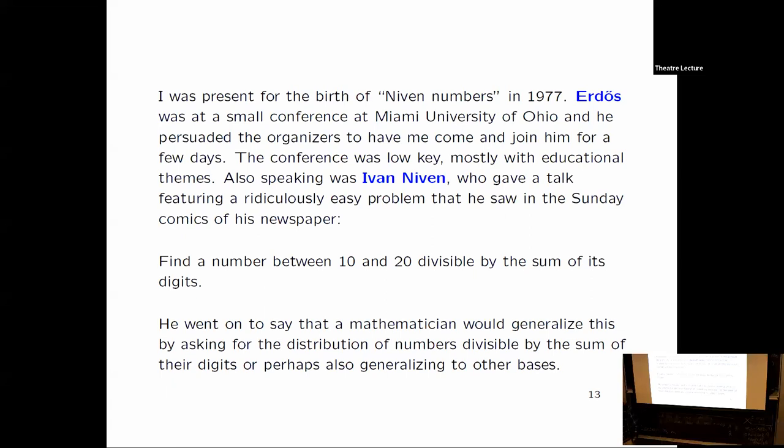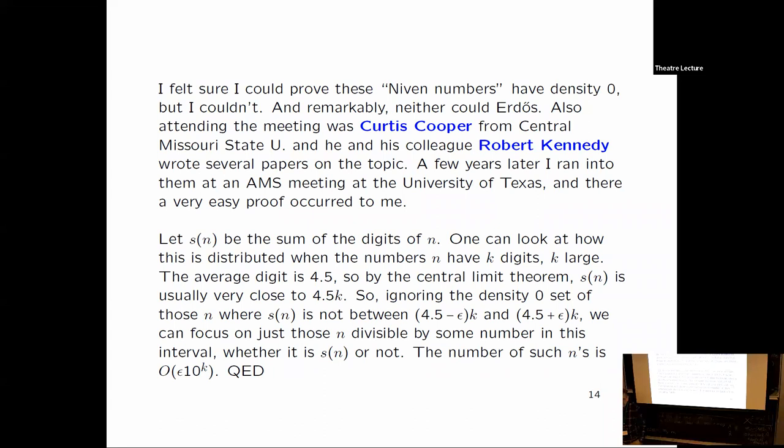Now when a mathematician wouldn't stop by saying it's absolutely trivial, they generalize to other bases for example for the distribution of such numbers and not restricting to the interval 10 to 20. So I thought that we should be able to prove that these Niven numbers, numbers divisible by the sum of their digits in base 10, that those numbers, that's a rare occurrence. These numbers should have asymptotic density zero. But I didn't really know how to prove it. And Erdős, I mentioned it to him, he didn't know how to prove it either. I guess he didn't think very hard because it turns out that it has a fairly simple solution.